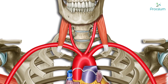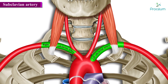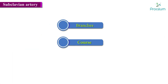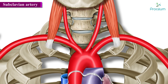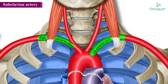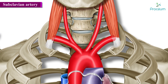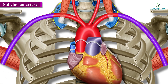The topic of discussion will be the anatomy of the subclavian artery. We are going to discuss the branches, course, and relevant clinical anatomy associated with the subclavian artery. We have two subclavian arteries — one on the left and one on the right. These are the two major arteries located in the thorax, lying beneath the clavicles. Once they pass the lateral border of the first rib, they officially form the axillary arteries.